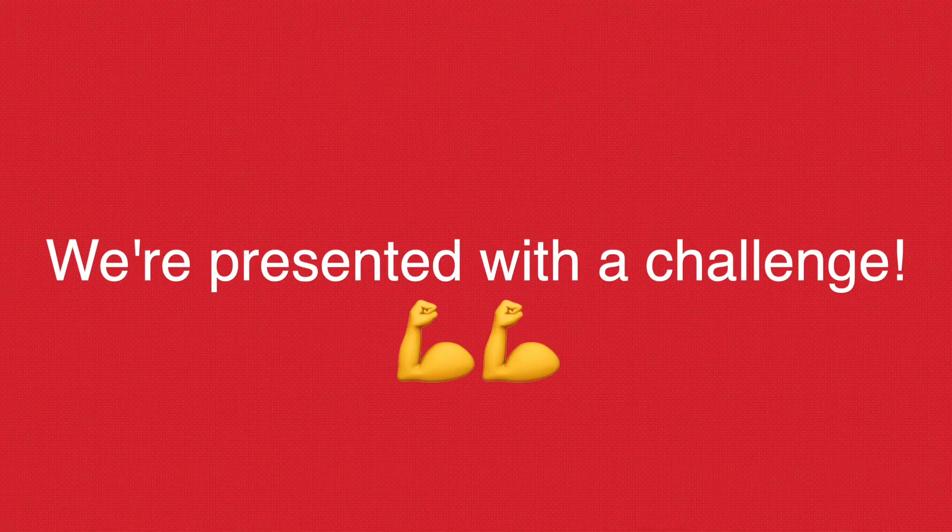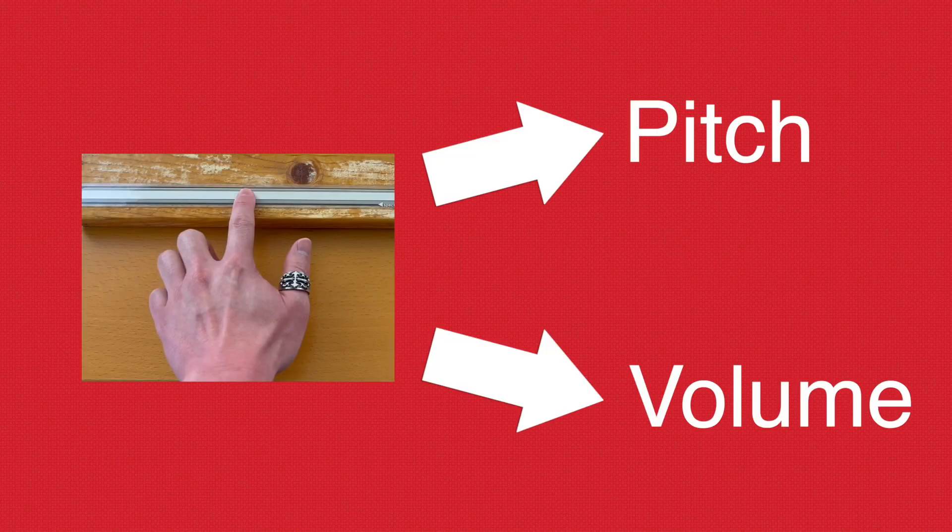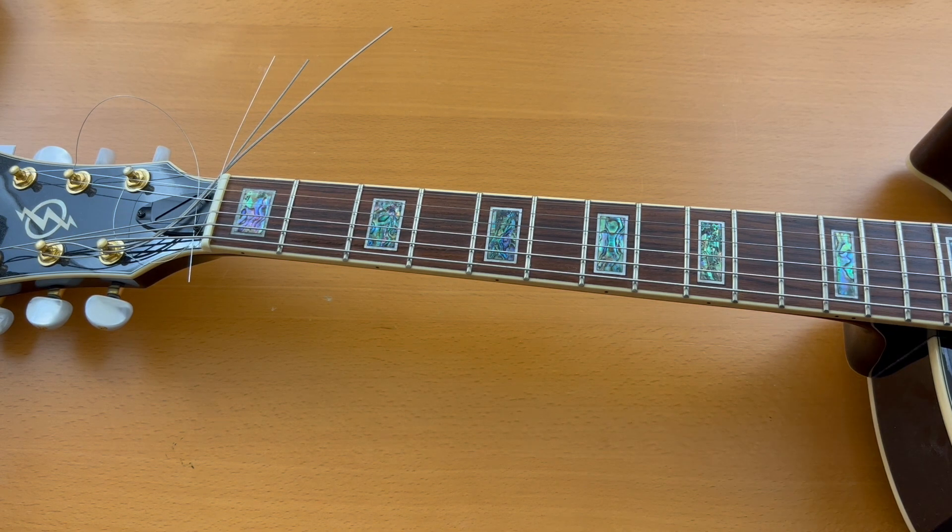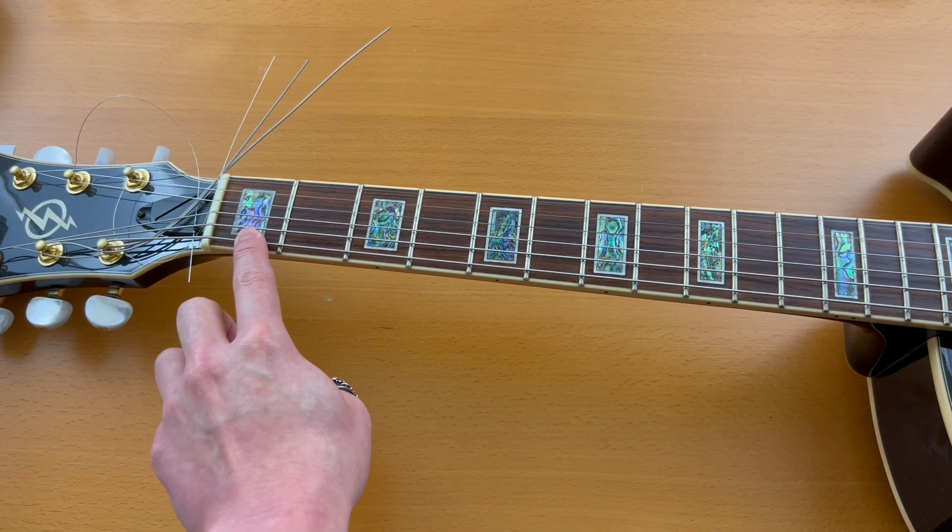Okay, so we're presented with a challenge. How do we control the pitch and the volume with one ribbon sensor? How about we take a look at an acoustic instrument for reference? Here's a guitar and I'm going to slide across the fret in two different ways.